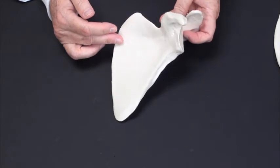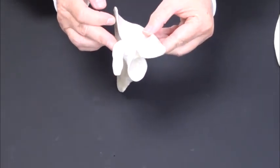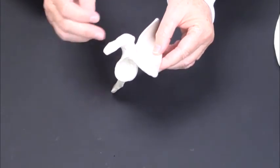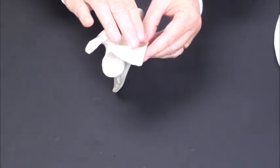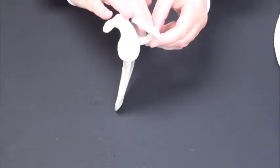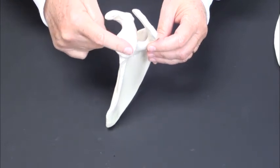In addition, in this view, you can also see a second process, an important process. This is the coracoid process. As I said, this is the acromion process. This is the joint surface of the shoulder joint. This is the glenoid cavity or glenoid fossa.